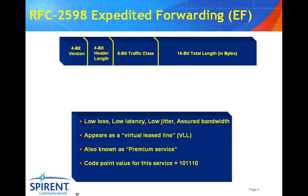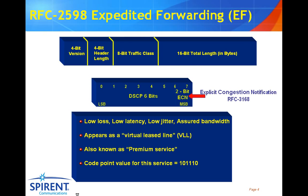RFC 2598, expedited forwarding, or EF for short, is also part of the differentiated services group. We use the same field in the IP header, again making use of the eight bits. However, there is only one unique bit pattern to define this class of service. If you see the bit pattern 1,0,1,1,1,1,0 in bits 0 through 5, this indicates that this packet is to be given the highest possible class of service that the network is capable of delivering. Expedited forwarding isn't often used, as assured forwarding — which I'll talk about in a moment — is becoming increasingly more popular. Again, you have the ability to use explicit congestion notification using RFC 3168.